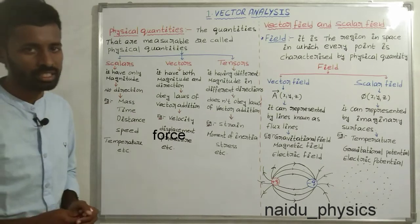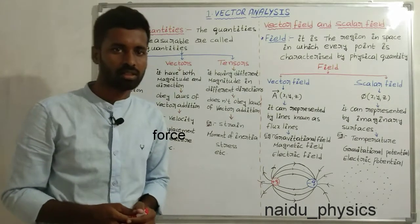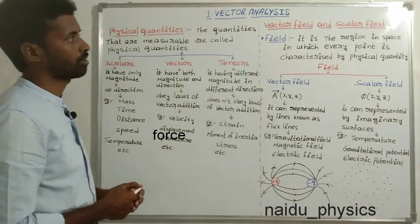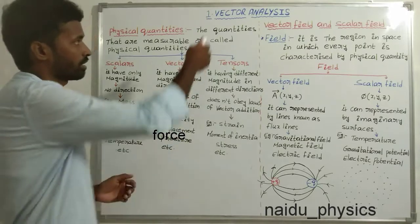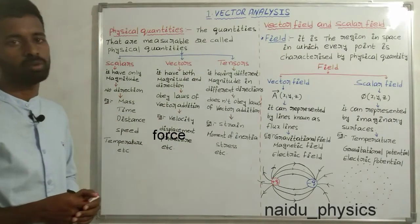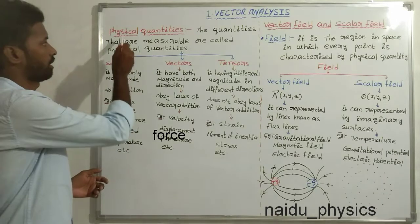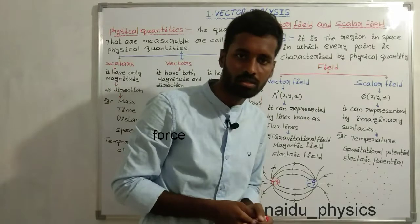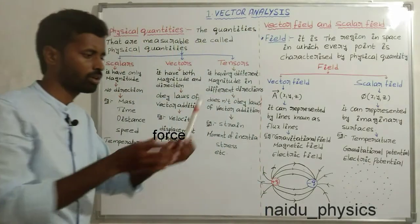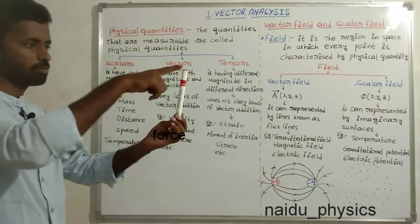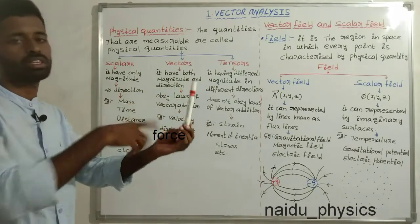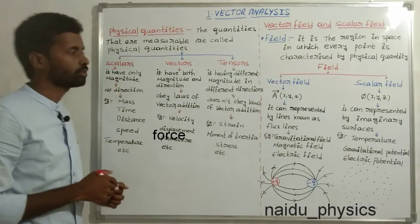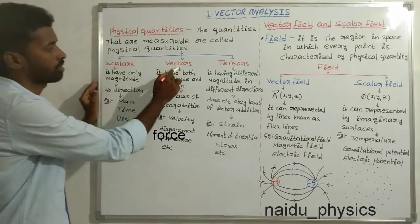Hi everyone, this is Vin. I do MSc Physics. The first unit is vector analysis. Before entering vector analysis, we have to study some basics. Physical quantities are quantities which are measurable. Physical quantities can be classified into three types: one is scalars, another one is vectors, and tensors.